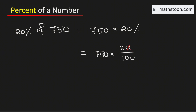Now let us cancel the common zeros. So it will be equal to 75 times 2, which is same as 150. Therefore, 20% of 750 is equal to 150, and this is our final answer.